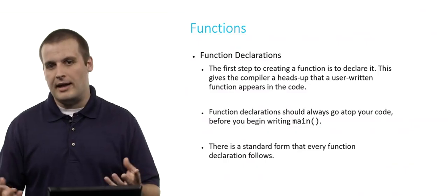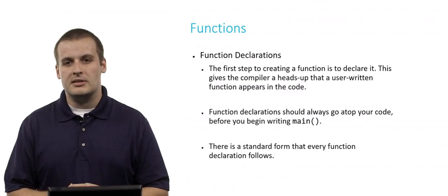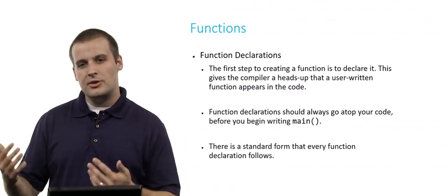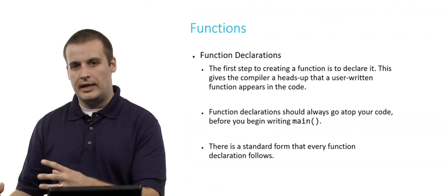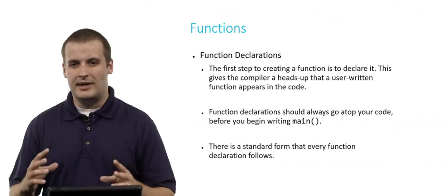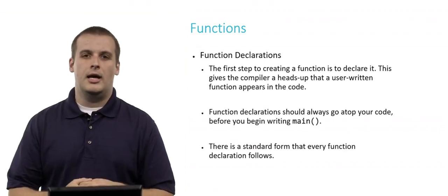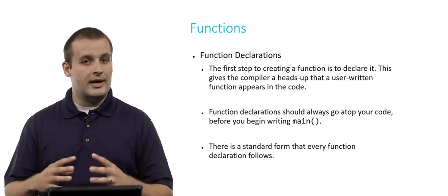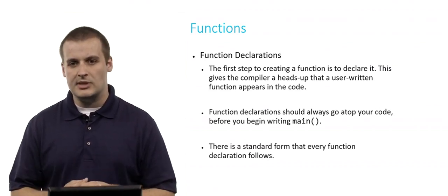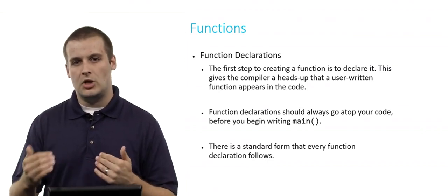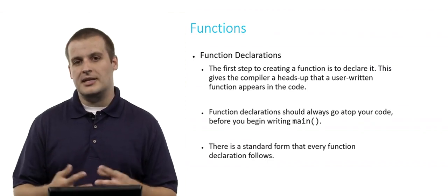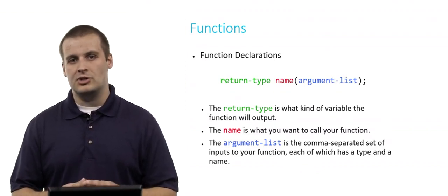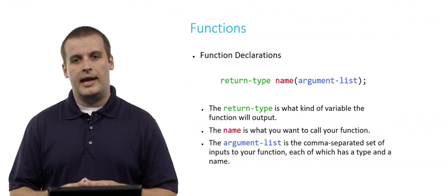All right, so functions are great. Now let's start writing them and getting them into our programs. In order to do that, the first thing we need to do is declare the function. When you declare a function, you're basically telling the compiler: just so you know, I am going to be writing a function later on, and here's what it's going to look like. The reason for this is because compilers can do some weird things if they see symbols they're not familiar with. Function declarations generally go at the very top of your code, right before you start writing main.